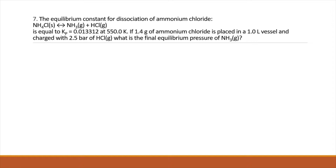Number seven: we're told the equilibrium constant for the dissociation of ammonium chloride is given with Kp. If 1.4 grams of ammonium chloride is placed in a one-liter vessel and charged with 2.5 bars of HCl, what is the final equilibrium pressure of ammonia? Let's start off with an ICE table — when in doubt, ice it out. We have NH4Cl solid in equilibrium with NH3 gas plus HCl gas.